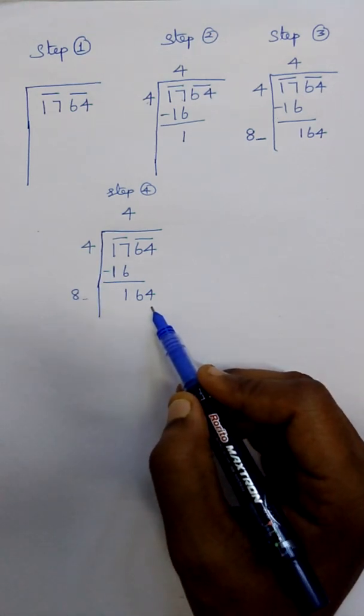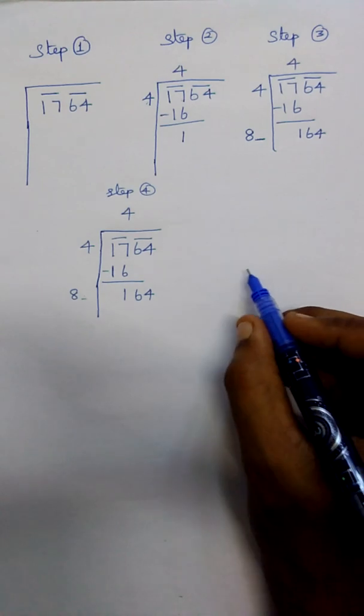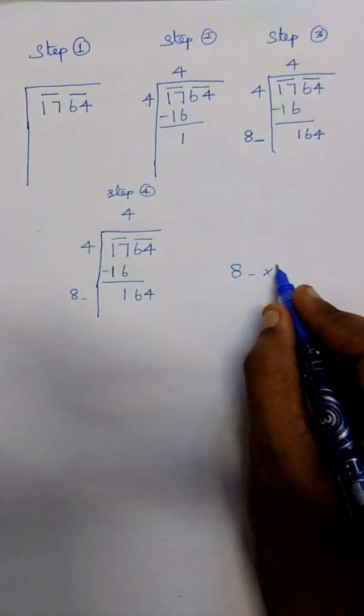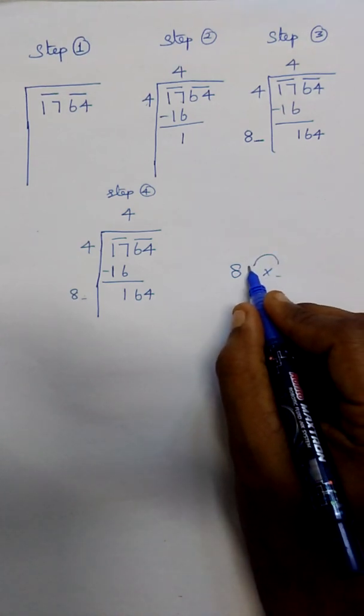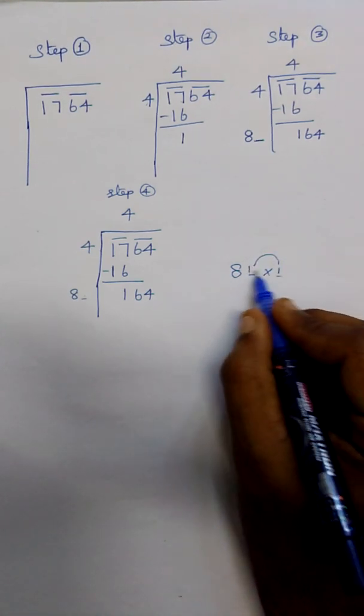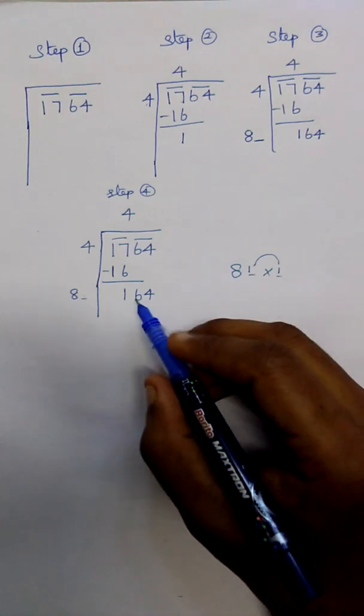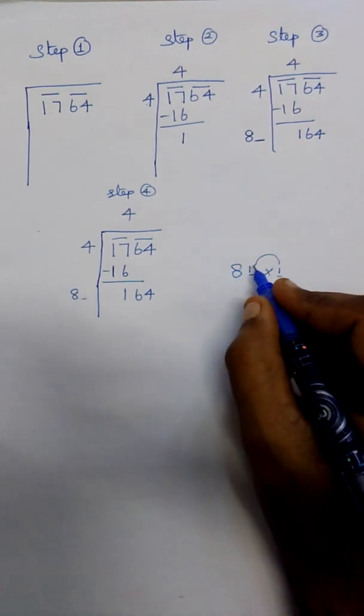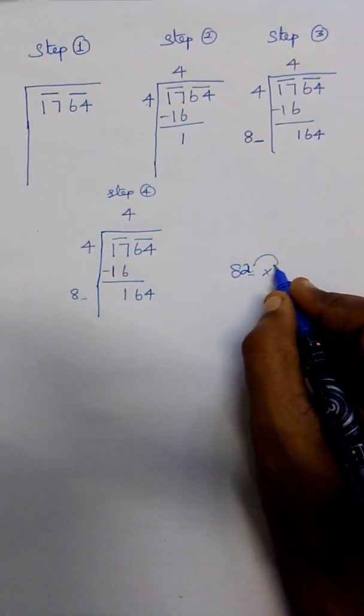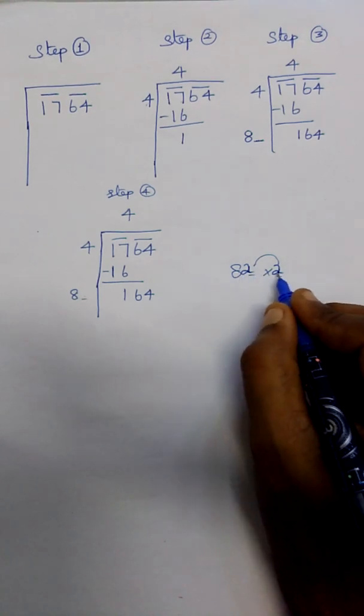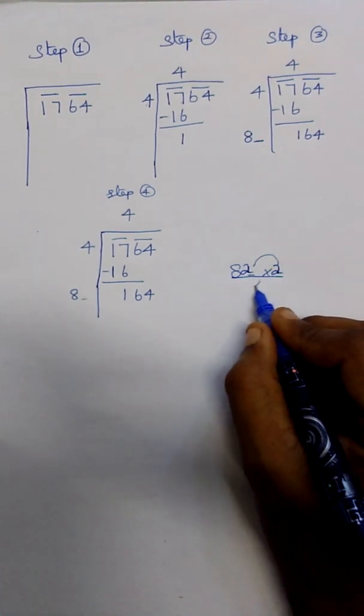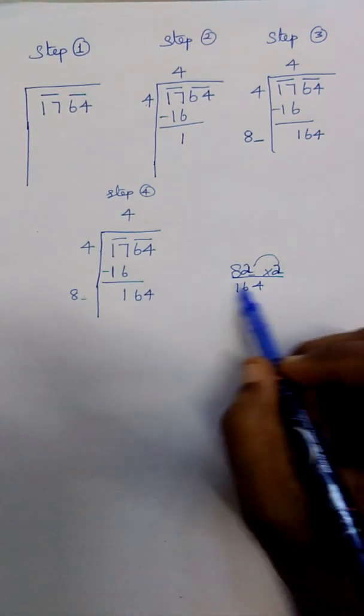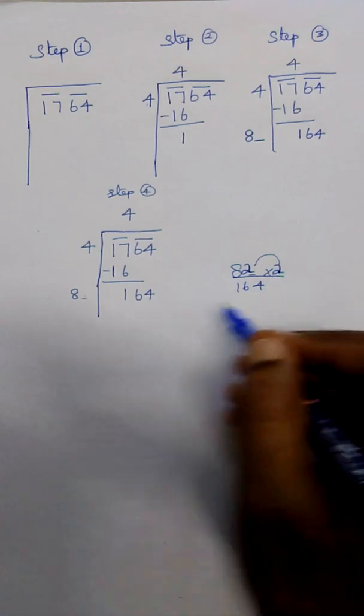We have to put the same square number here and here. If I put one, eighty-one will come, so that's too small. I put the square number two, so eighty-two into two - two twos are four and two eights are sixteen. See, the same value is here, so I use two.